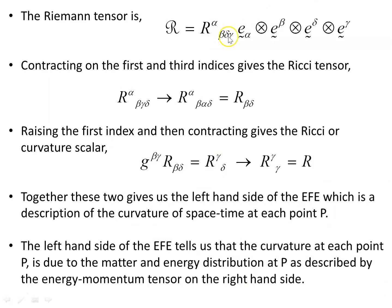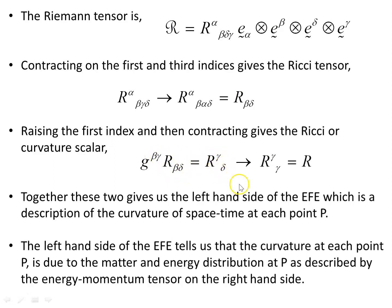The Riemann tensor written out in component form as a tensor product of its basis vectors and one-forms: contracting on the first and third indices gives the Ricci tensor. We contract on the upper first index and the third gamma lower index, giving us the Ricci tensor — going from a rank-4 tensor to a rank-2 tensor. Then raising the first index using the inverse metric and contracting again gives the Ricci or curvature scalar.